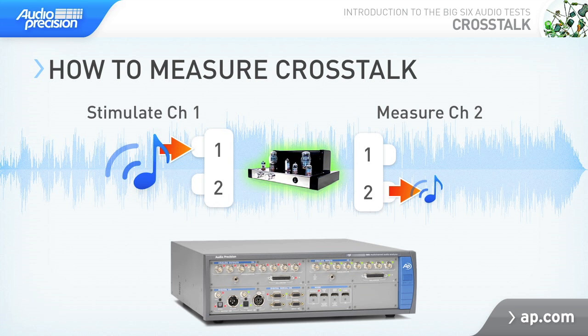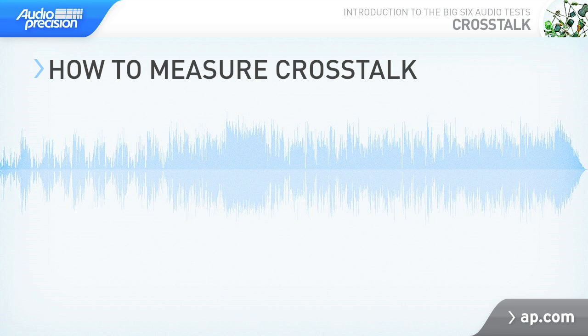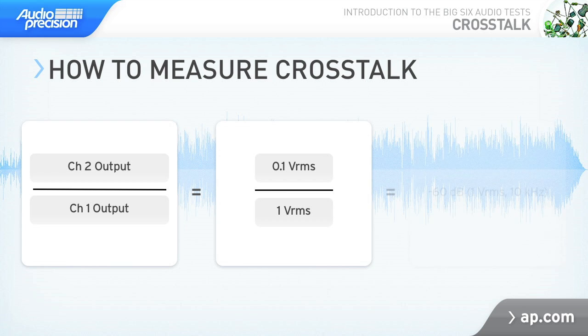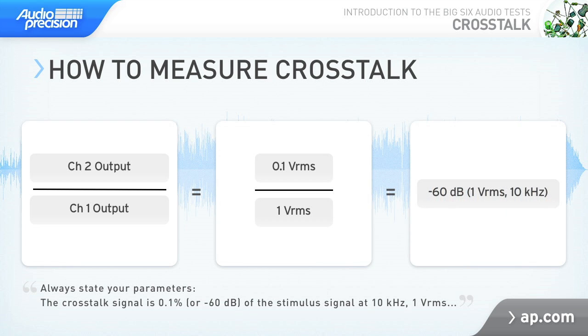Where crosstalk is present, we'll see some signal that corresponds with the signal we're giving in channel 1. To get a value for crosstalk, we take the level from the channel we're measuring and divide by the full amount we measure on the stimulated channel. Because crosstalk is a ratio, it's usually expressed in decibels.